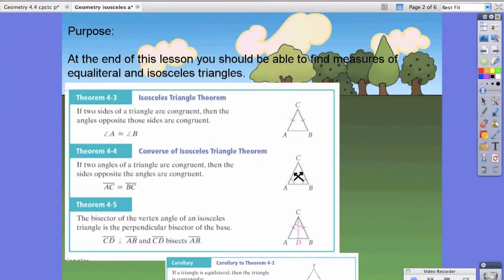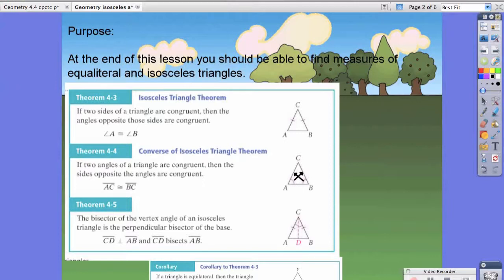And theorem 4.5 states that the bisector of the vertex angle of an isosceles triangle is the perpendicular bisector of the base.